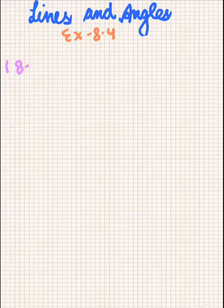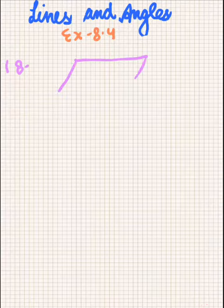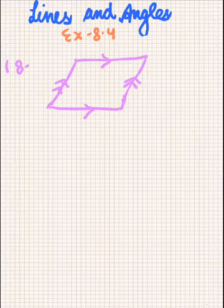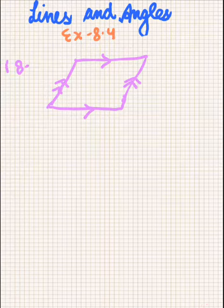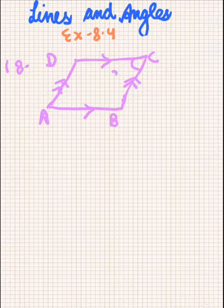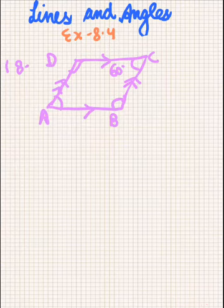Suppose this is a quadrilateral and its opposite sides are parallel. Let's name it quadrilateral ABCD, whose opposite sides are parallel. If one angle of the quadrilateral is 60 degrees, find the other angles. Suppose angle C is 60 degrees, and the remaining angles have to be found.